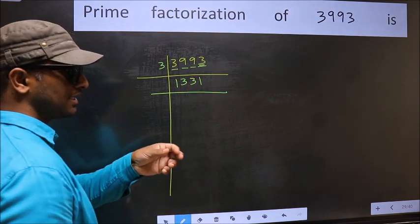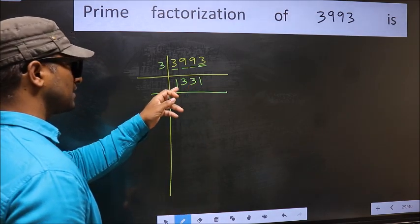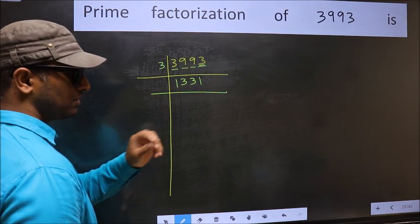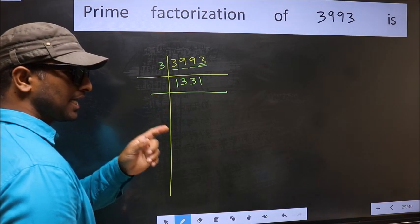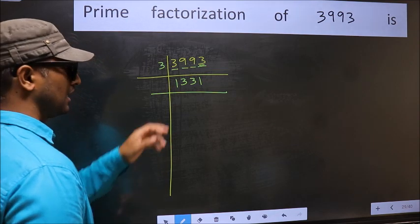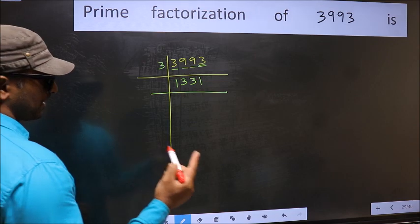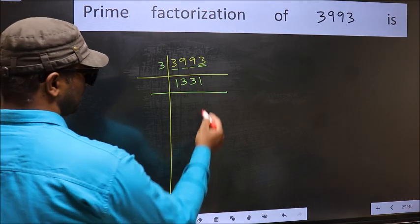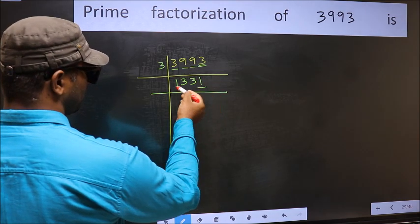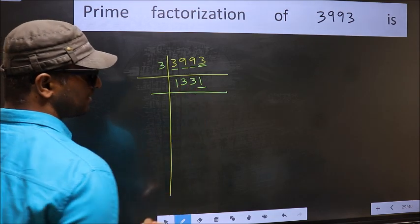Add the digits: 1 plus 3 plus 3 plus 1 equals 8. And 8 is not divisible by 3, so this number is not divisible by 3. Next prime number 5. Last digit is neither 0 nor 5, so this is not divisible by 5.